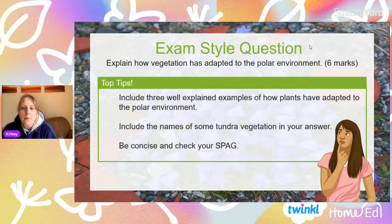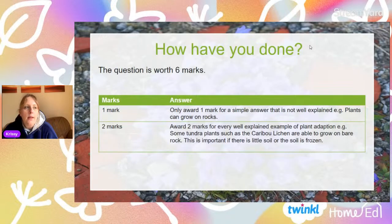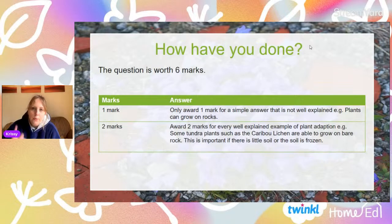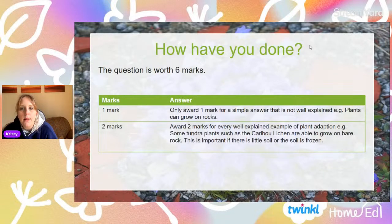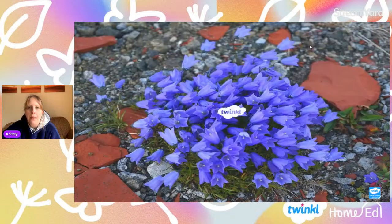You could talk about the flowers rotating towards the sun and why; the shallow root system and why; being able to grow on bare rock and why; the small needles and why. If you use three examples and explain them, that gives you the six marks. This is an example of the mark scheme: if you give a simple answer — they can grow on bare rock, their flowers can move to face the sun, their root systems are shallow — you'd get one mark for each. If you explain each, you'd get two marks for each well-explained example. For instance: 'Some tundra plants such as caribou lichen are able to grow on bare rock. This is important if there is little soil or the soil is frozen.' You're welcome to send your answers via DM and I will happily mark them for you.